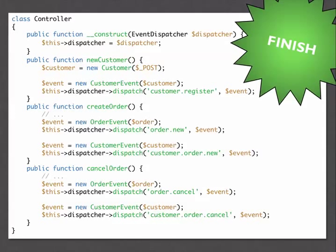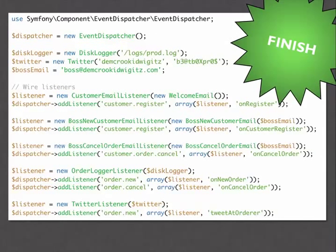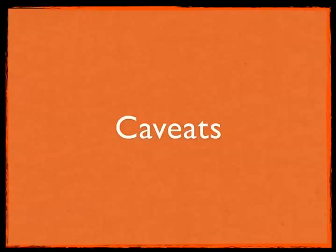Now we're finished. Looking at all our wired-up listeners, we can see at the very top there's a section where we configure all our dependencies and their configuration. If we wanted to go further, we could do an if-statement saying if executing in development, pass in separate config parameters — log to syslog on our local machine, post to a test Twitter account. We could even abstract which objects are created based on what environment you're in.